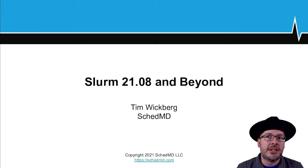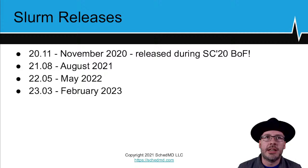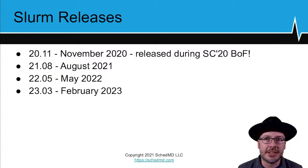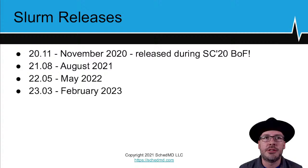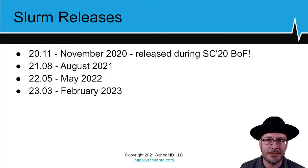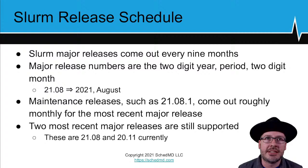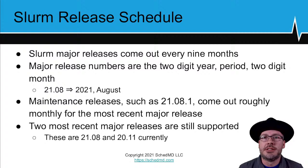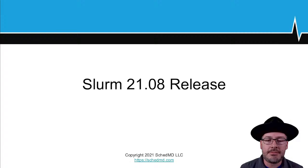I'm here to talk about the Slurm 2108 release and further into the future. Starting with our general release strategy overview: we have the 2011 release done in November 2020, released live during the SC20 Birds of a Feather session. The 2108 release is the most recent, made this August. Coming up we have the 2205 release in May 2022 and the 2302 release in February 2023. Major releases come out every nine months, with maintenance releases like 2108.1 coming out roughly monthly with bug fixes. SchedMD officially supports the two most recent major releases.